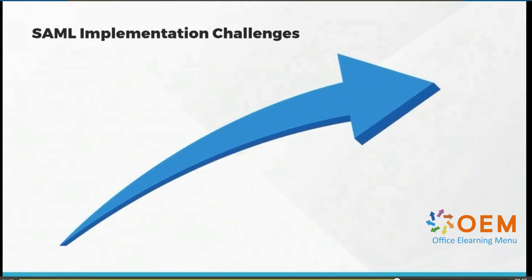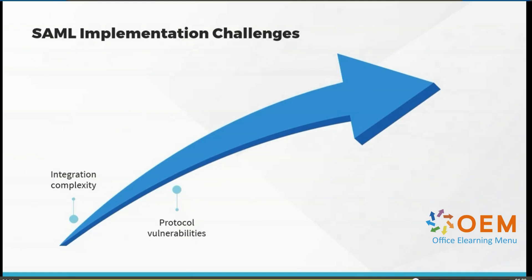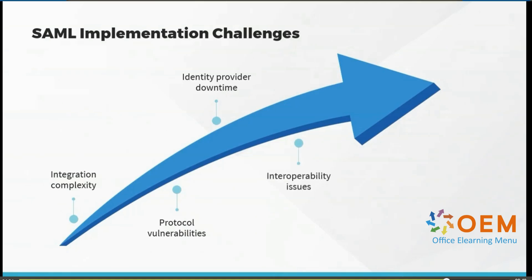However, there can be challenges, including integration complexity, which may require advanced skill sets and detailed process documentation to overcome. No protocol is 100% effective nor 100% secure, but updates are always being developed to reduce vulnerabilities, so be sure to apply all updates to minimize risk. If there are any service disruptions with the identity provider, you could experience downtime, so configure your provider with redundancies and failover mechanisms to ensure higher availability. Interoperability issues may arise between the identity provider and the service provider, but adhering to all best practices should yield more effective results.